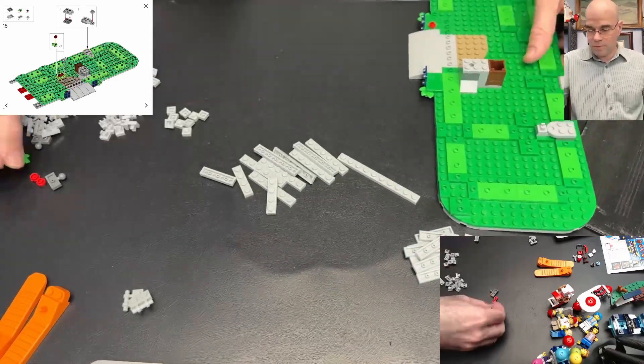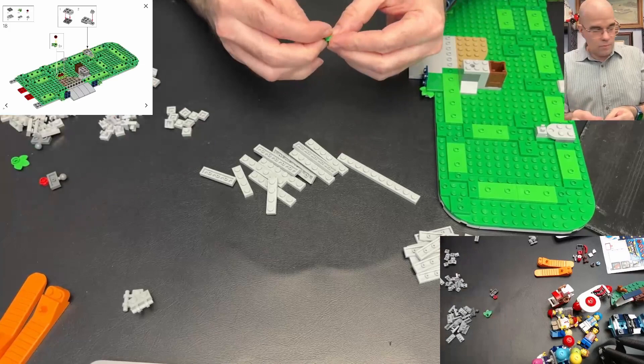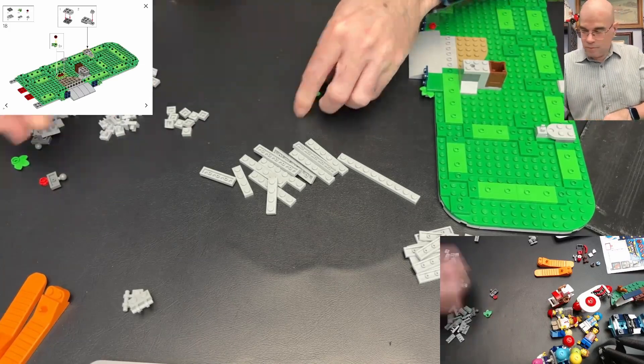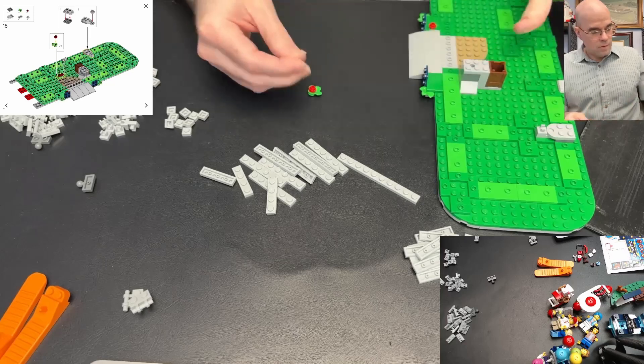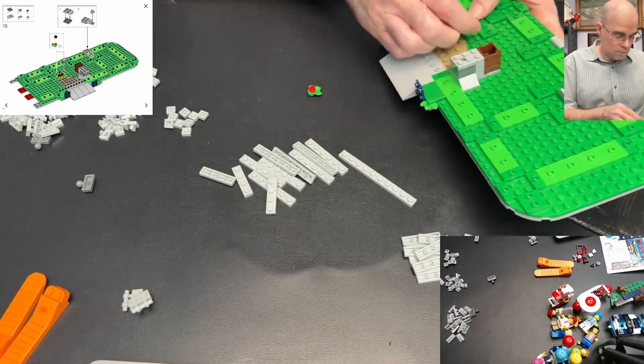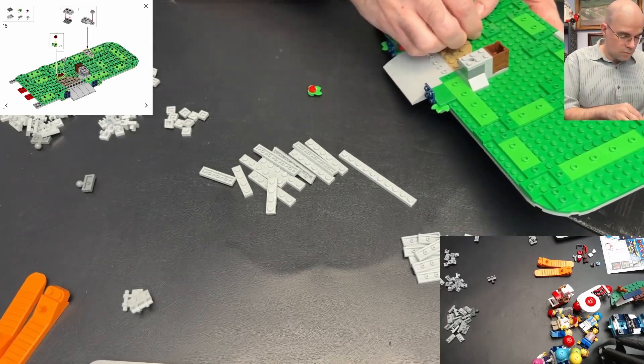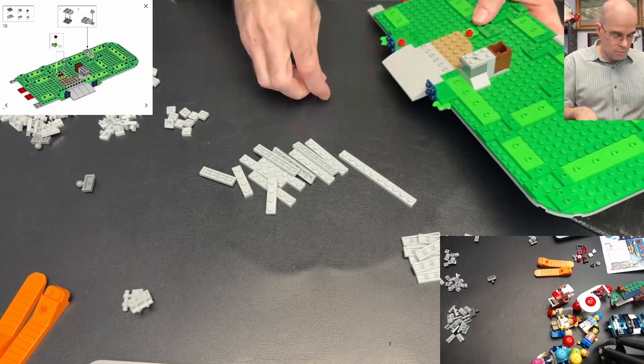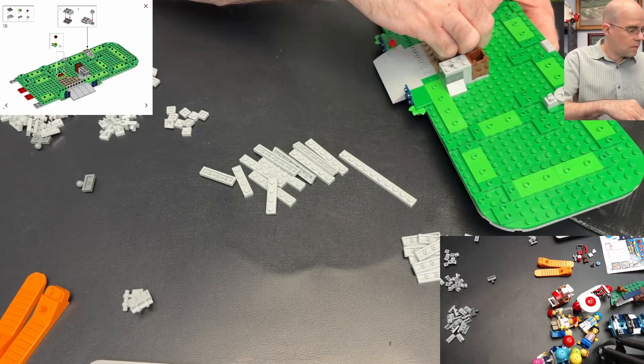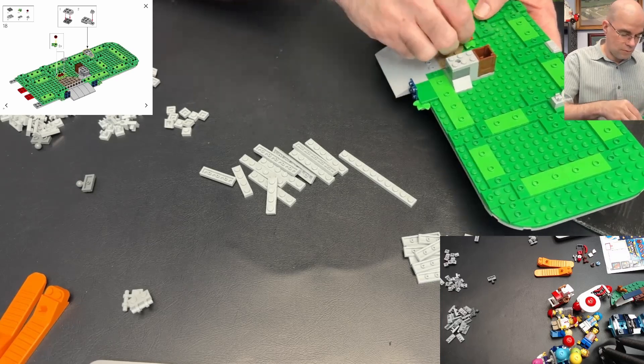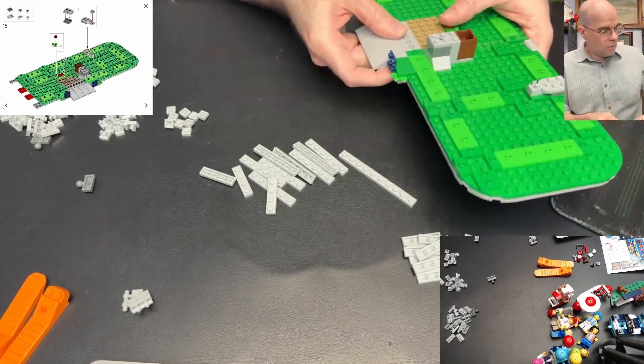And then the jumper there. And we have these leaves with flowers. Put those together and they sit here in front of the, looks like it's gonna be a walkway.